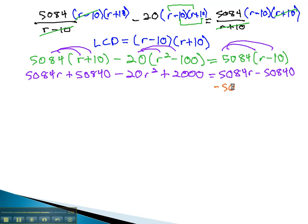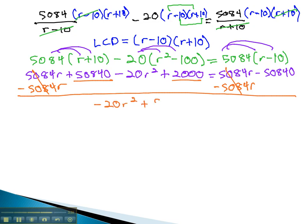Again, with the 5084 times r on both sides of the equation, we can subtract it out to reduce the number of terms. We'll also combine like terms on the left to give us negative 20r squared plus 52840 equals negative 50840.